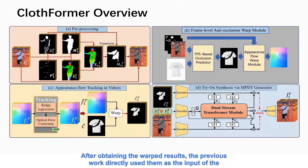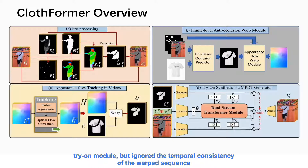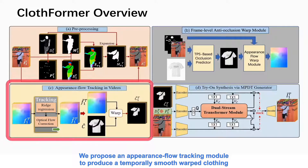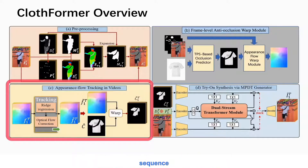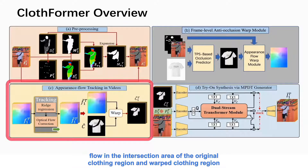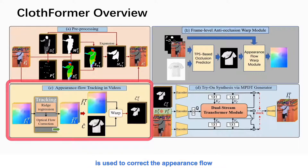After obtaining the warped results, previous work directly used them as the input of the try-on module, but ignored the temporal consistency of the warped sequence. We propose an appearance flow tracking module to produce a temporally smooth warped clothing sequence. We optimize the appearance flow sequence by ridge regression. To accommodate the model's movement changes and environmental influences, the optical flow in the intersection area of the original clothing region and warped clothing region is used to correct the appearance flow.